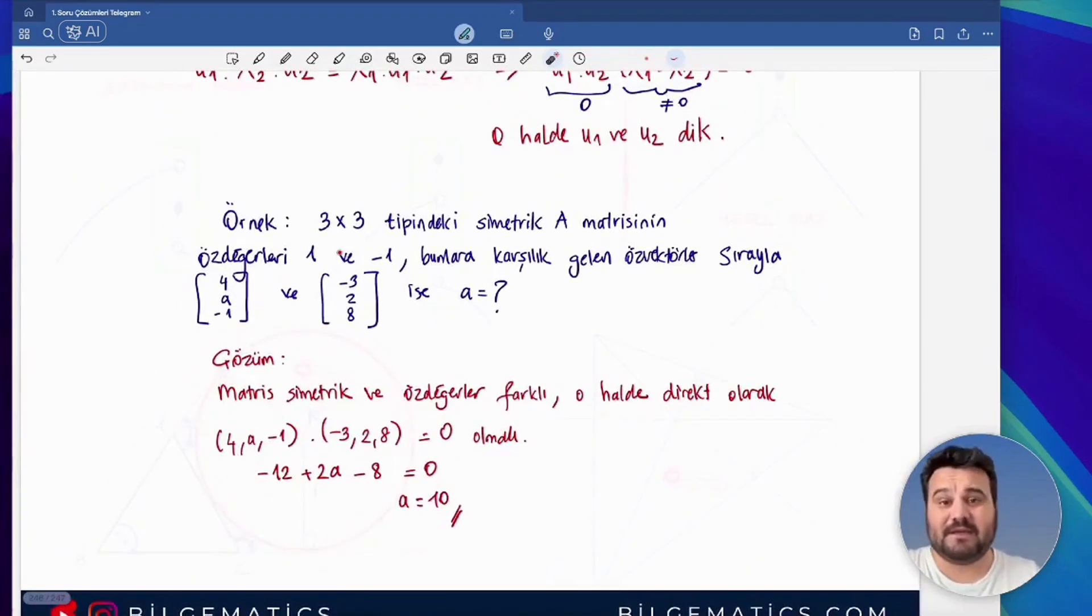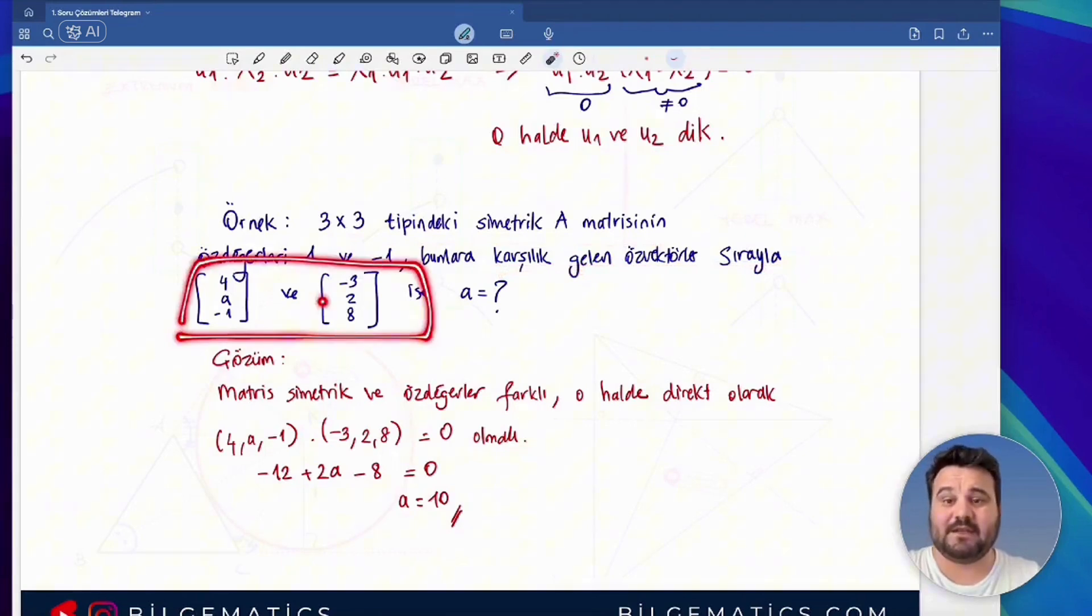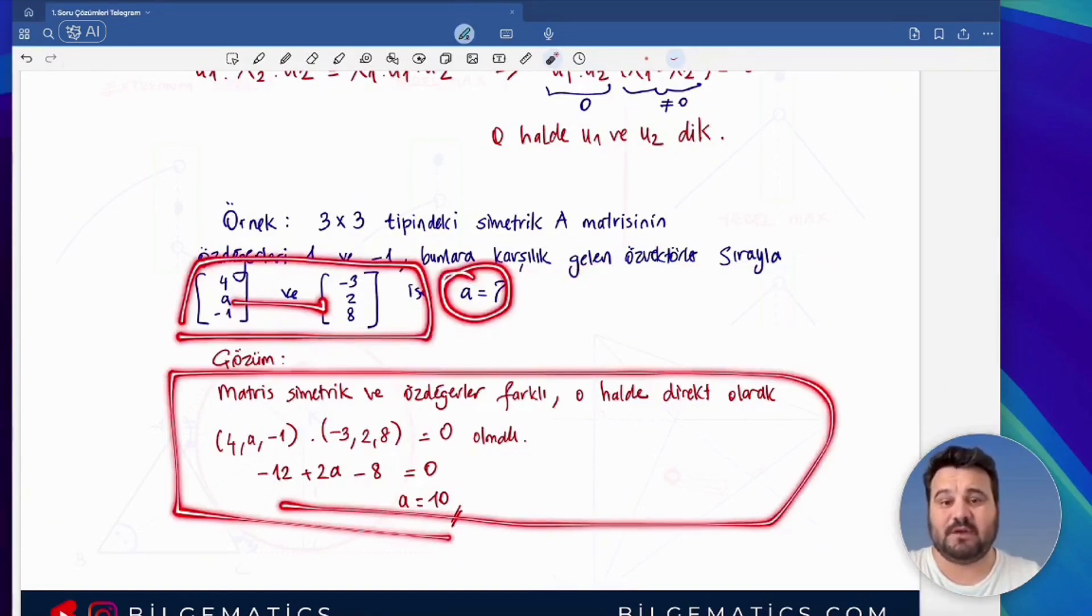So, what does this provide us? In light of all this information, if we are told about the 3x3 type symmetric A matrix, if the eigenvalues are different and the corresponding eigenvectors are given, we can directly reach the answer by making the inner product of these vectors zero.